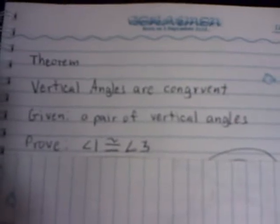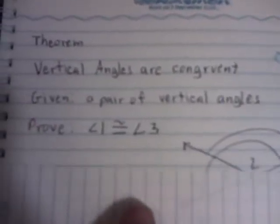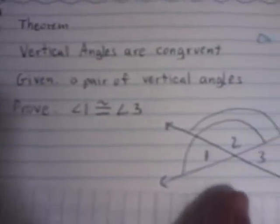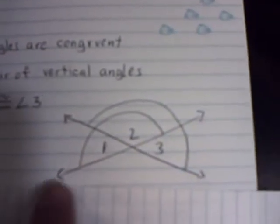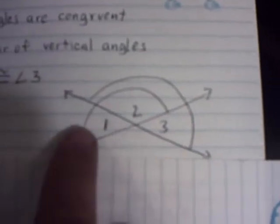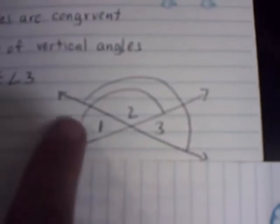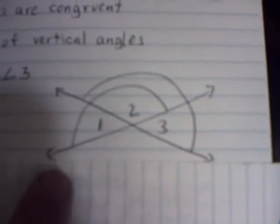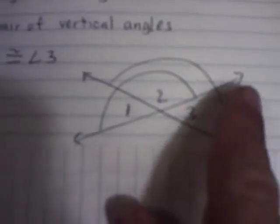We're going to prove the theorem: vertical angles are congruent. We have a given pair of vertical angles, and we want to prove that they're congruent. Looking at the drawing, we have two lines crossing each other. Angles one and three are vertical, so what's given is that angles one and three are vertical, and what we want to prove is that angles one and three are congruent.